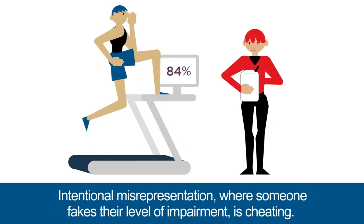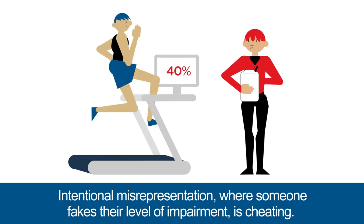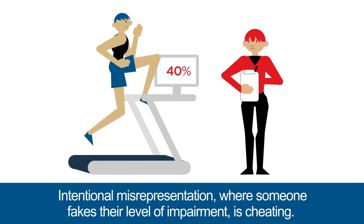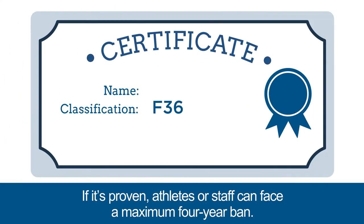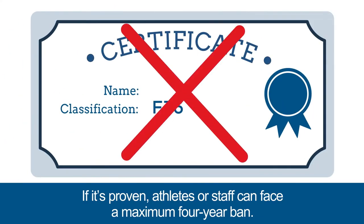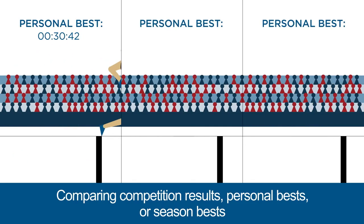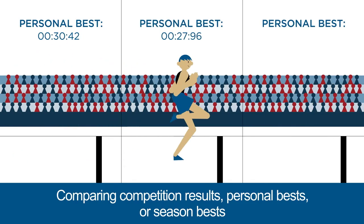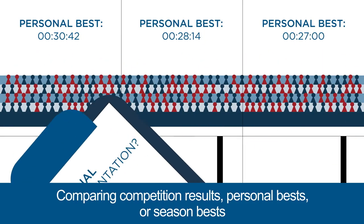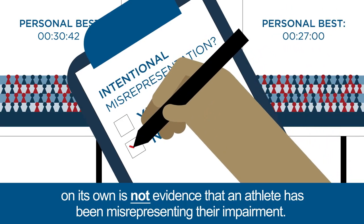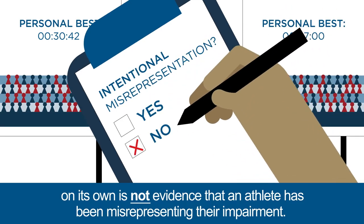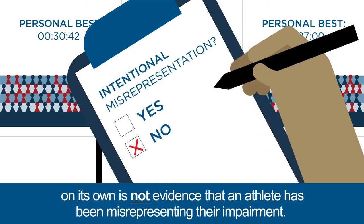Intentional misrepresentation, where someone fakes their level of impairment, is cheating. If it's proven, athletes or staff can face a maximum four-year ban. Comparing competition results, personal bests, or season bests on its own is not evidence that an athlete has been misrepresenting their impairment.